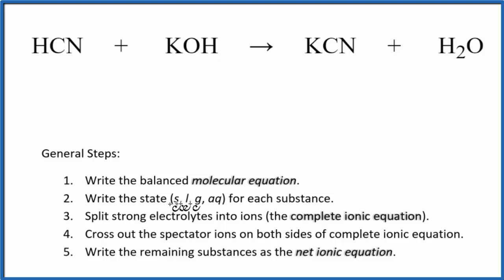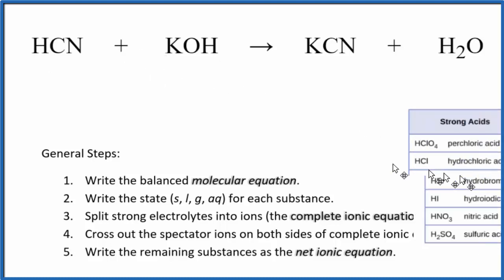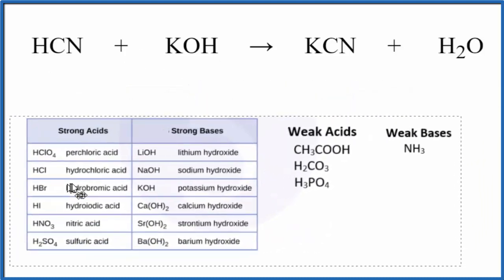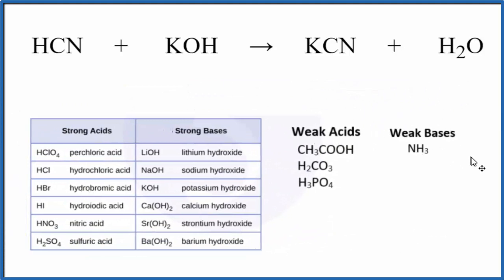Then we need to write the state for each substance, so we want to know if these are going to be soluble in water. We take a look here, this is a table of common acids, strong and weak acids. We're looking down here and we don't see HCN as a strong acid. We don't see it as a weak acid, but if it's not on this list, it's a weak acid.